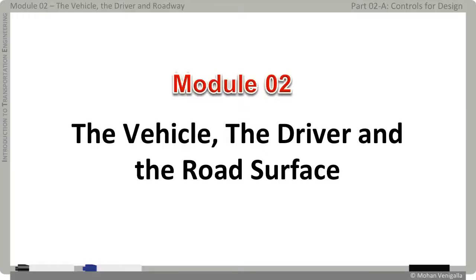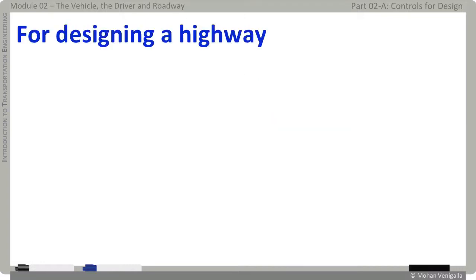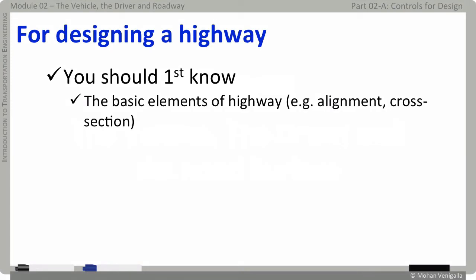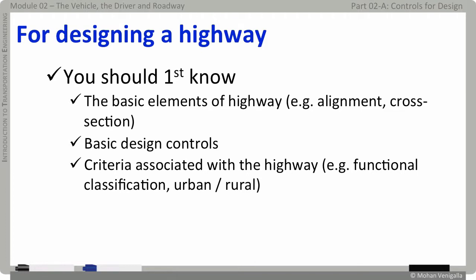In this second module we are going to study the variables associated with the vehicle, the driver, and the roadway surface that affect highway design. If you want to design a highway, first you must understand the basic elements of highway including its alignment and cross-section. The designer must have an understanding of the basic design controls, which we will discuss in this module, and the criteria associated with the highway — that is, the functional classification discussed in module 1 and whether it is in an urban or a rural area.